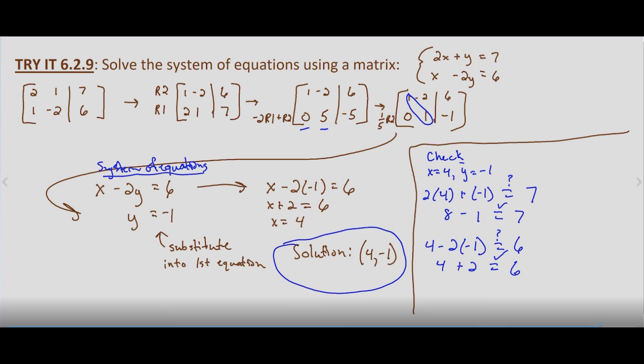And then, as always, we check it by substituting our values that we determined in our solution into both equations, and verifying that they make true statements. So, the system of equations that we were given, 2x plus y equals 7, x minus 2y equals 6, by putting it in row echelon form, then rewriting the system of equations that we found, our solution is 4, negative 1. x equals 4, and y equals negative 1.